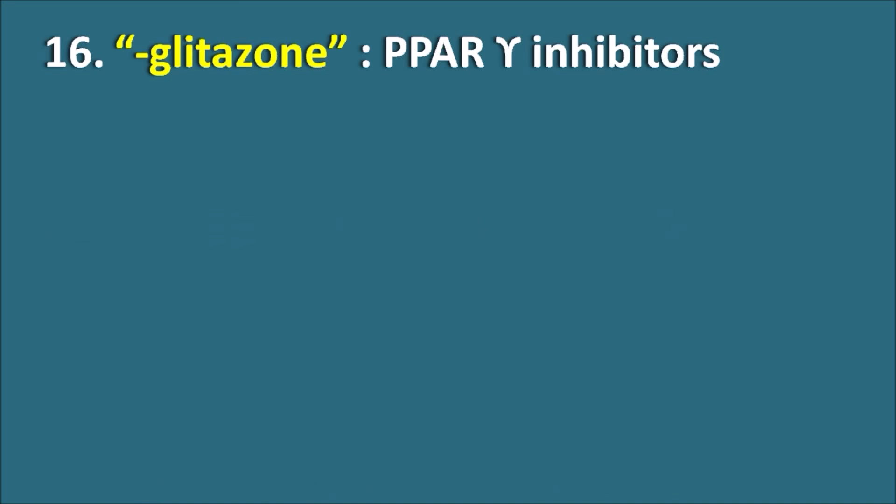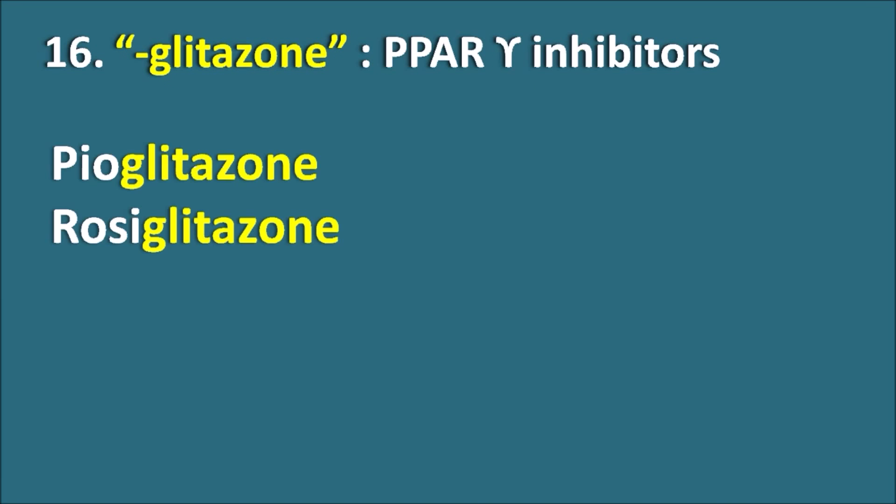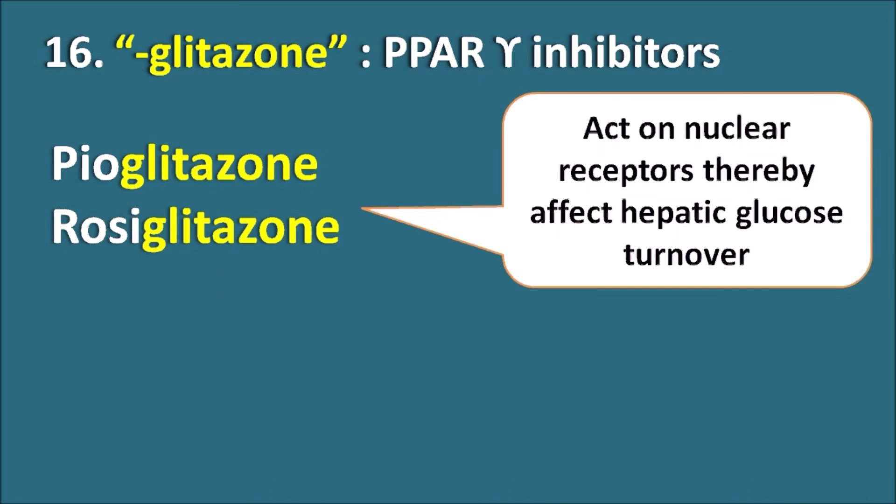Sixteenth, the suffix '-glitazone' indicates PPARgamma agonists. Drugs like Pioglitazone and Rosiglitazone act on nuclear receptors, thereby affecting hepatic glucose turnover. Hence they are used as antidiabetic agents.